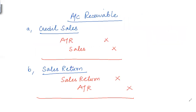Before creating bad debts and allowance, we need to understand some adjustments about receivables. When a customer makes a credit sale, the receivables increase and the sales increase. So we pass the entry: Account Receivables debit, Sales credit.